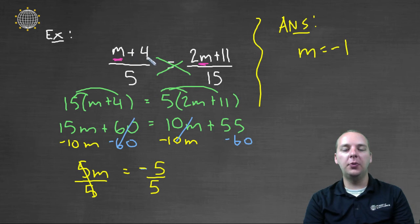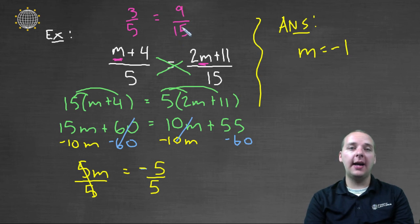Negative one plus four is three, so the left-hand side would be three-fifths, compared to two times negative one is negative two. Negative two plus eleven makes nine. And so we'd have nine-fifteenths, and in fact, nine-fifteenths is equivalent to three-fifths.